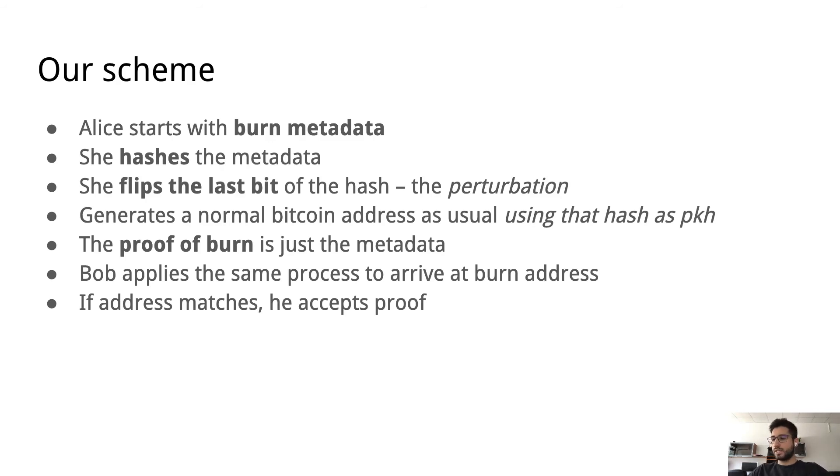Now let's look at the next contribution, which is that we propose our own scheme for this, and it is actually a very simple scheme. We have Alice, and she basically starts with some burn metadata, which we previously called the tag, and then she basically needs to hash this and flip the last bit. We call this flipping perturbation. So then this basically is what will be her address. This is already like a Bitcoin address, for example. Then the proof of burn for proving that she has burned, she can actually provide a transaction and then the tag, and then someone else, because this is deterministic, if they follow the same procedure and go and hash the metadata and then flip the last bit, they should arrive at the address found in the transaction. Then if there's a match, they can accept the proof.